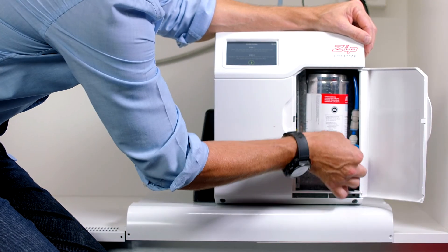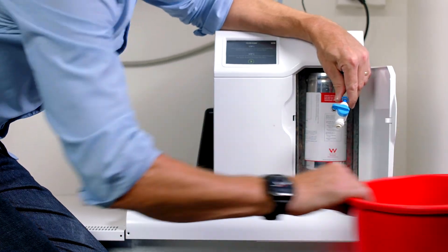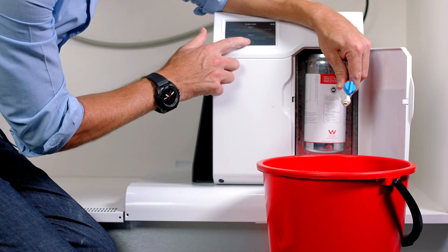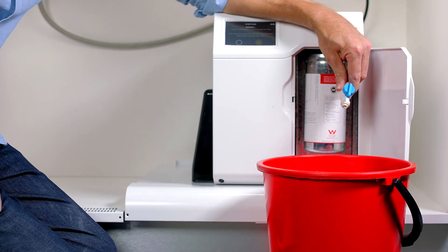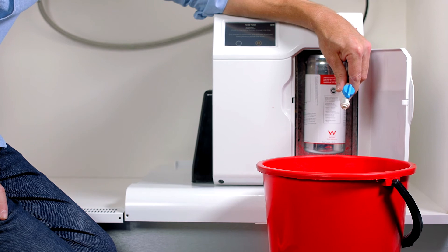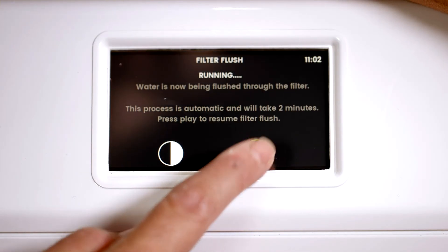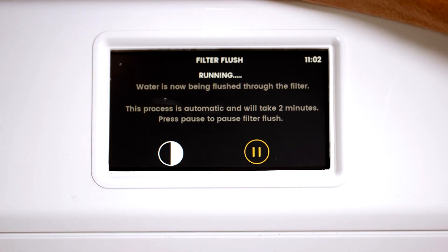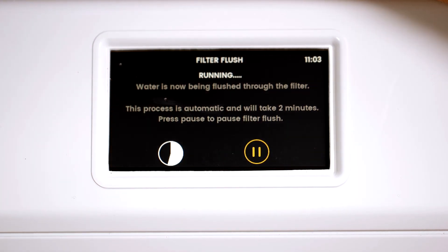Next the internal filter needs to be flushed. Using a bucket place the filter flush hose in the bucket and open the stopcock. Press the play button and the filter flush process will start. This process is timed to take two minutes. If you need to pause the filter flush process just press the pause button on the LCD and then when you're ready to resume the filter flush press the play button.